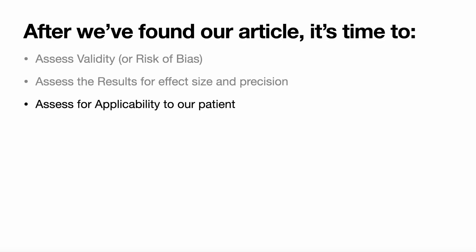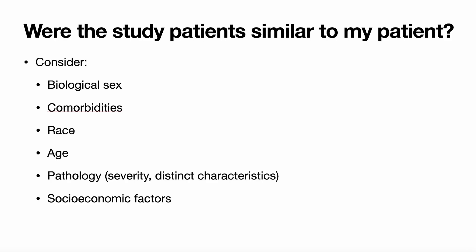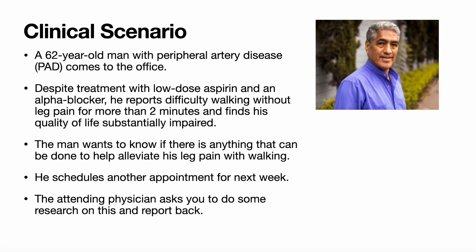Finally, we want to assess for applicability to our patient. The questions we ask are: Were the study patients similar to my patient? Were all patient-important outcomes considered? And are the likely treatment benefits worth the potential harm and costs? To assess patient similarity, we consider biological sex, comorbidities, race, age, pathology, severity, distinct characteristics, and socioeconomic factors.